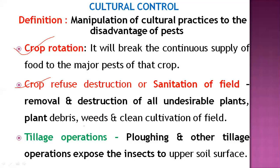Tillage operations are also very helpful. During land preparation, farmers use plowing and other tillage operations to break the soil, which exposes insects that are hidden or hibernating inside the soil. This exposes stages like grasshopper eggs and hibernating pupae of borers to the surface, where vertebrates like birds and abiotic factors can destroy them. Tillage operations effectively destroy these hidden pest stages.